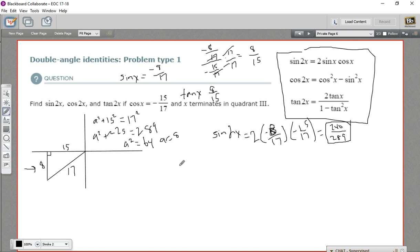Let's try cosine of 2x next. So that is cosine squared, so negative 15 17ths squared, minus sine squared, and that is negative 8 17ths squared. All right. So this is going to be 225 over 289 minus 64 over 289. And that is 161 over 289. So that is the cosine of 2x.